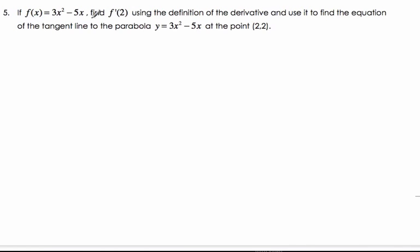In this example, we're given this function f of x, and we are asked to find f prime at 2 using the definition of the derivative. So this means the derivative at 2, and use it to find the equation of the tangent line to this parabola at this point. I know that this f of x function is just some parabola of some kind.